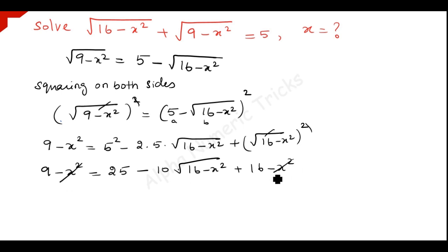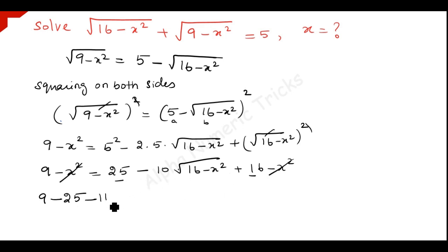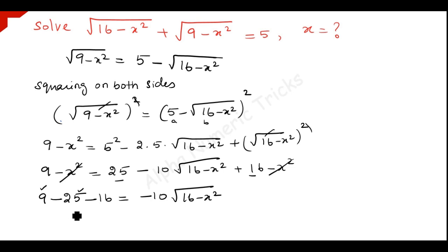Here you have minus x squared on the left hand side and minus x squared on the right hand side — both terms get cancelled. Taking all the constants to one side: 9, taking plus 25 to the left hand side becomes minus 25, and plus 16 to this side becomes minus 16, is equal to minus 10 times square root of 16 minus x squared. So 25 minus 9 gives minus 16, meaning minus 32 is equal to minus 10 times square root of 16 minus x squared.